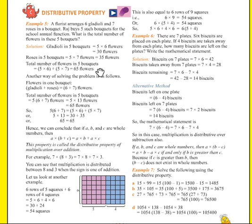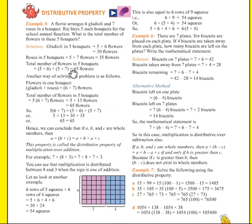So the total number of flowers in five buckets equals five into six (bracket) plus five into seven (bracket) — because the first term represents gladioli and the second represents roses. That equals 30 plus 35, which gives us 65 flowers.